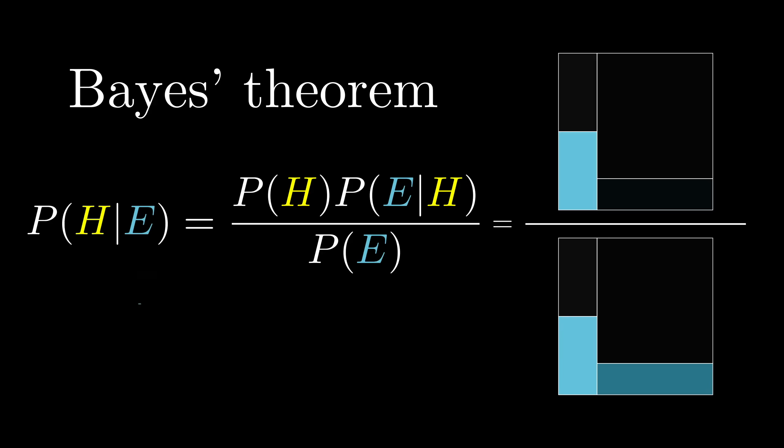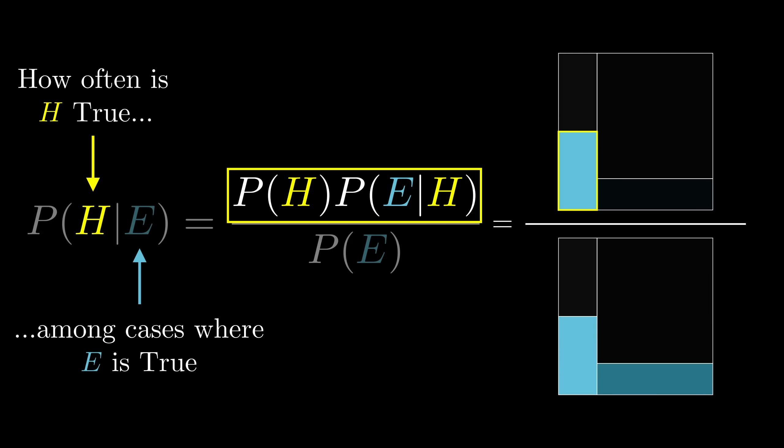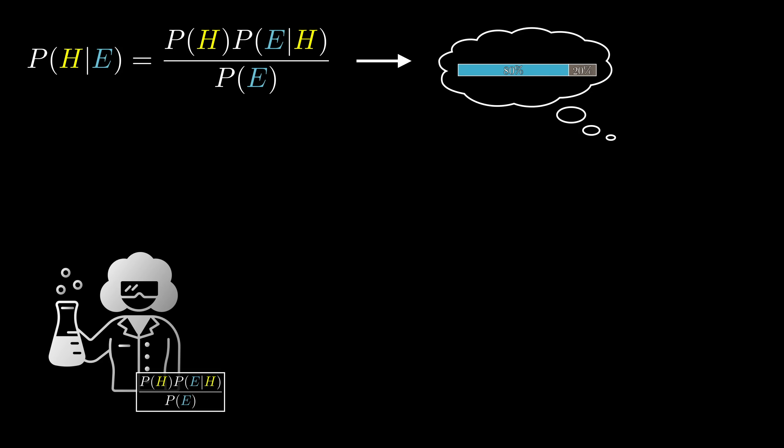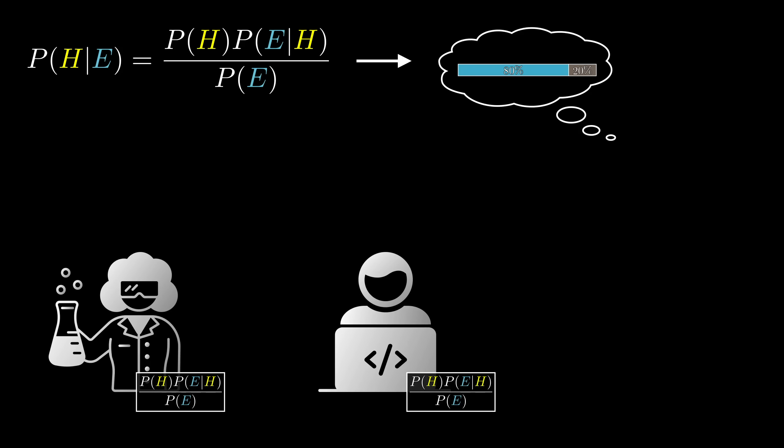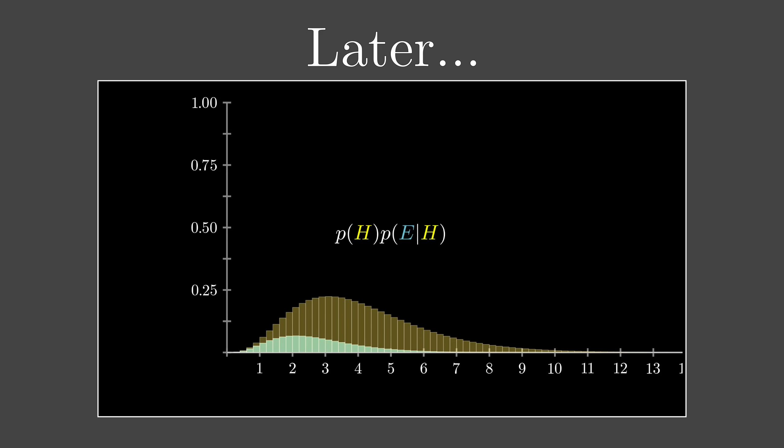Once you digest what it's saying, it's actually kind of obvious. Both sides tell you to look at the cases where the evidence is true and then to consider the proportion of those cases where the hypothesis is also true. That's it. That's all it's saying. The right-hand side just spells out how to compute it. What's noteworthy is that such a straightforward fact about proportions can become hugely significant for science, for artificial intelligence, and really any situation where you want to quantify belief. I hope to give you a better glimpse of that as we get into more examples.